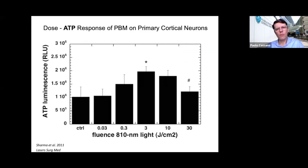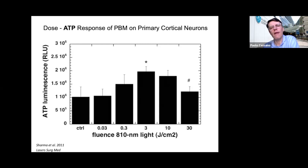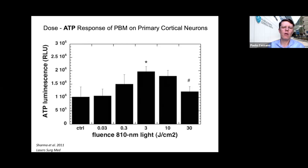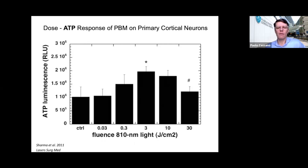Both our group at MGH and the group of Qian 'Cheng' Fang at Northeastern University were dealing with this dilemma. We wondered if computerized simulation models could provide concrete, tangible information to inform clinical study dosimetry, avoiding the pitfalls of previous studies. The Northeastern group already had precise data from cortical neuron cultures showing what dose is needed to make a difference.